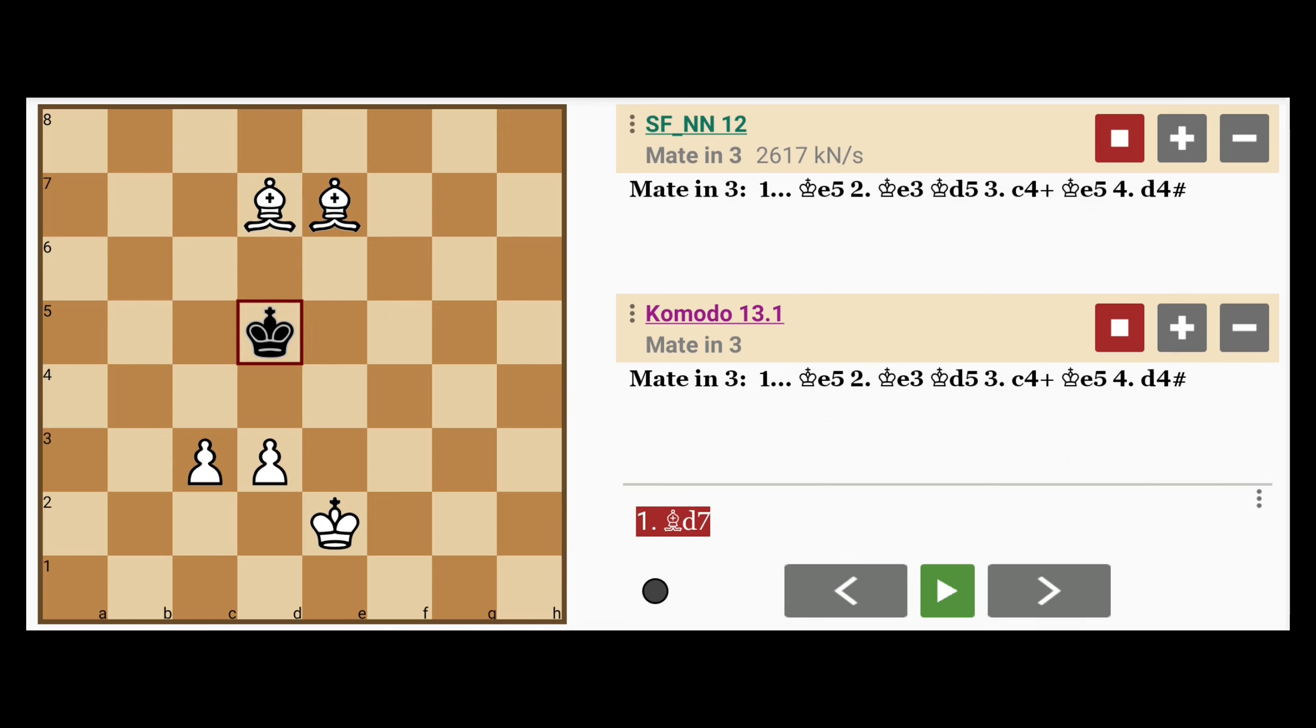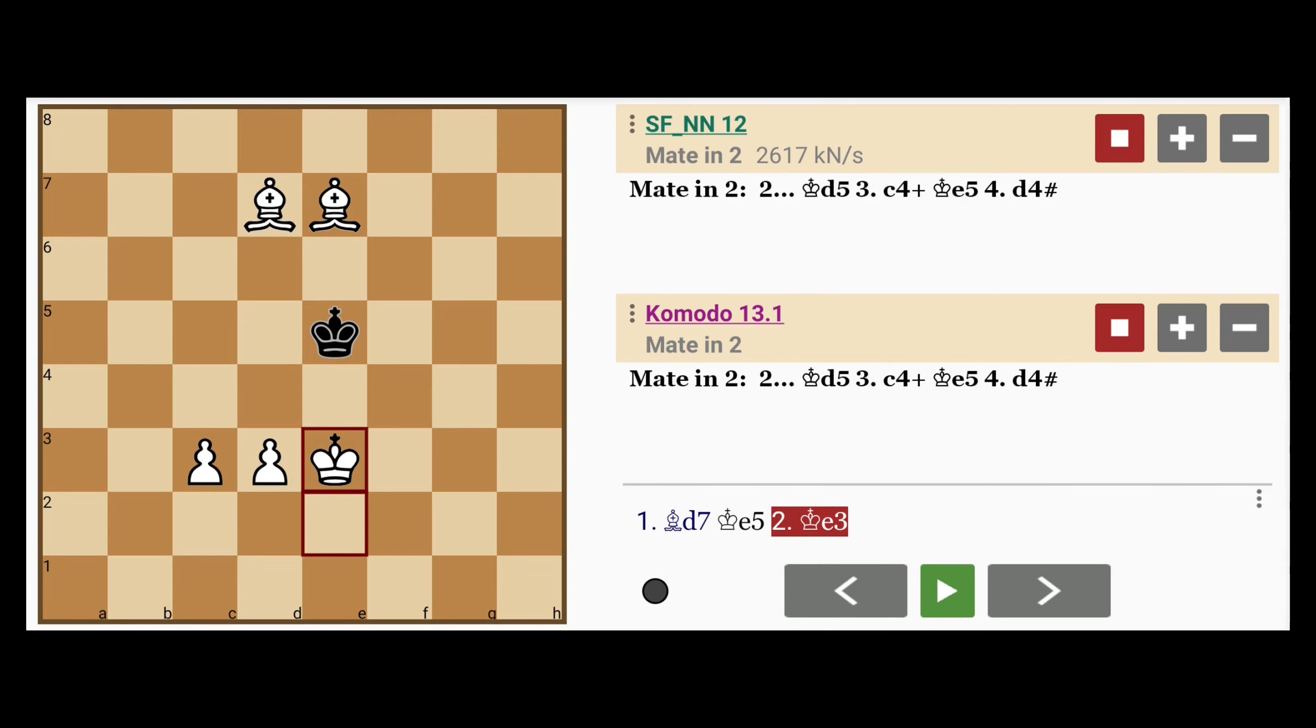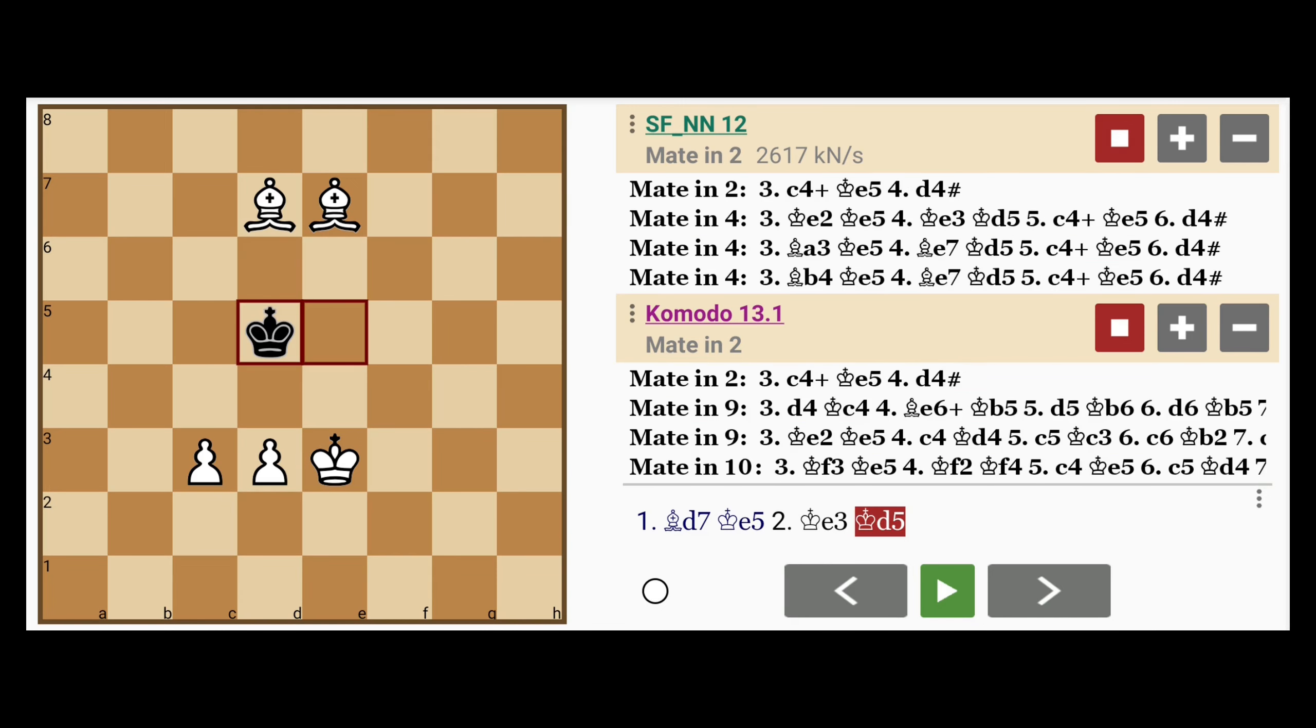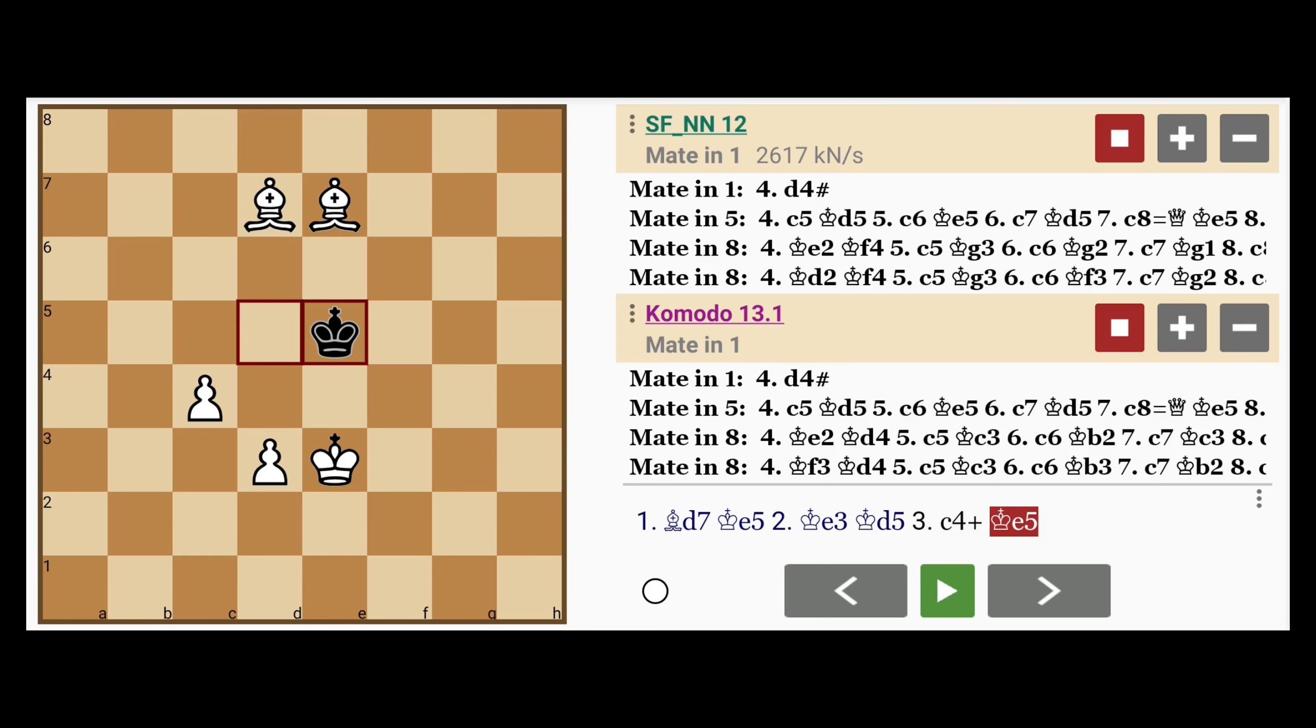This leaves black with only one move, which is king to e5. White then moves his king to e3, so the kings are opposed to each other. Black moves back to d5, and now is the time to play c4 check, since the king cannot move down to d4. King moves back to e5, and white mates with d4.